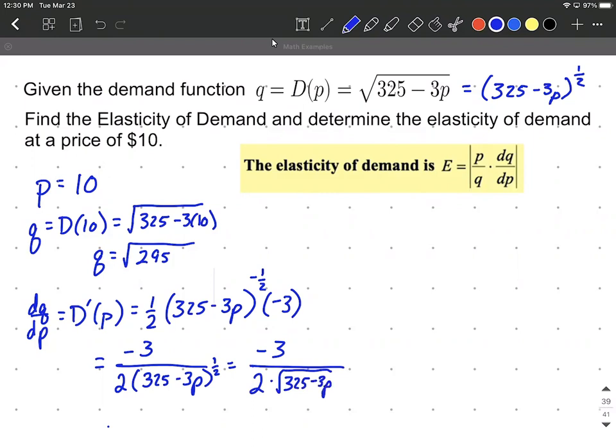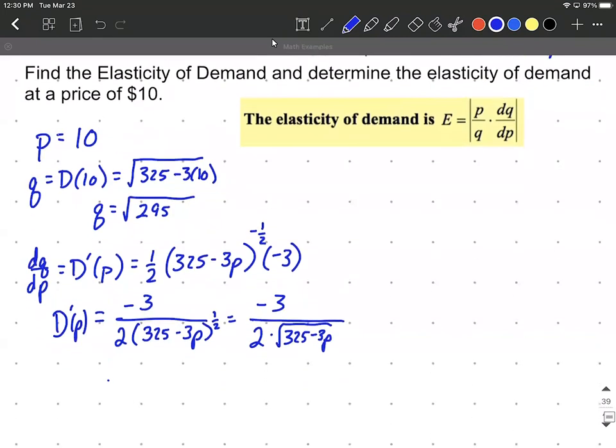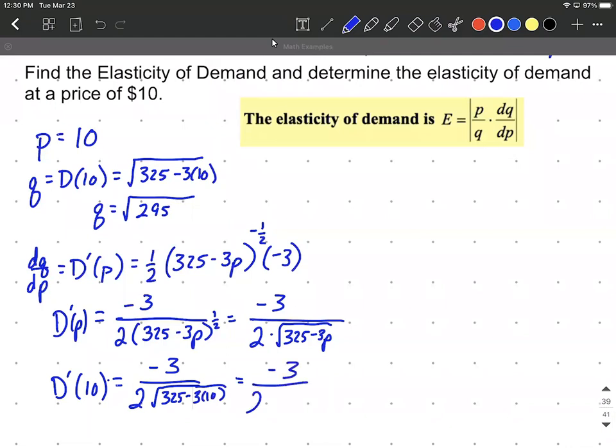Finally, what I would probably do before I substitute in my 10 is I would think about this as negative three over two times the square root of 325 minus 3P. That one half, of course, is going to be rewritten as a square root. So that's still the derivative of P. We want to evaluate that at a price of $10. So we're going to say the derivative evaluated at 10 is going to be negative three over two times the square root of 325 minus three times 10. It's going to be negative three over two times, again, this is the square root of 325 minus 30 is 295.